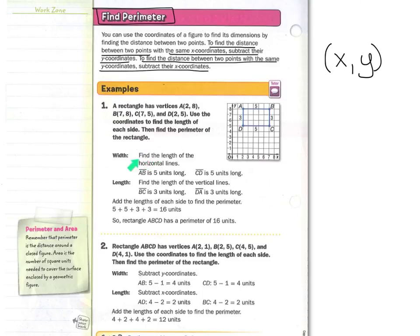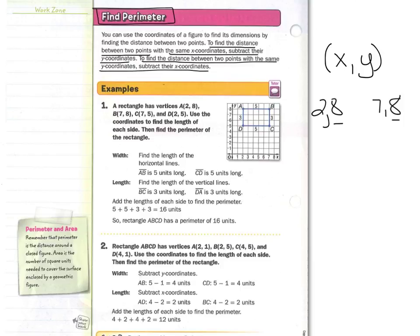Those are 5 units long. You can count them 1, 2, 3, 4, 5. Or what you could have done was simply subtract. The points were 2, 8 for A and B was 7, 8. They have the same y-coordinate, so if they have the same y-coordinates, subtract their x-coordinates. So 7 minus 2 is 5. That's the distance.